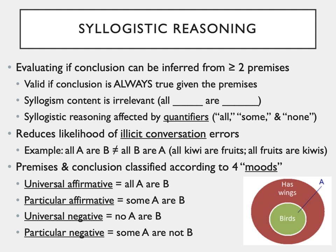Premises and conclusions are classified according to what are known as moods. There are four moods in syllogistic reasoning. The universal affirmative is "all A are B." The particular affirmative is "some A are B." The universal negative is "no A are B." And the particular negative is "some A are not B."